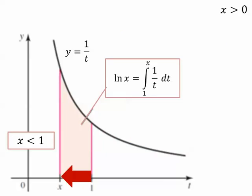As x gets closer and closer to 0, the net area is growing without bound. But the integral is negative for x being less than 1. So the limit will be negative infinity as x approaches 0, coming from the right.